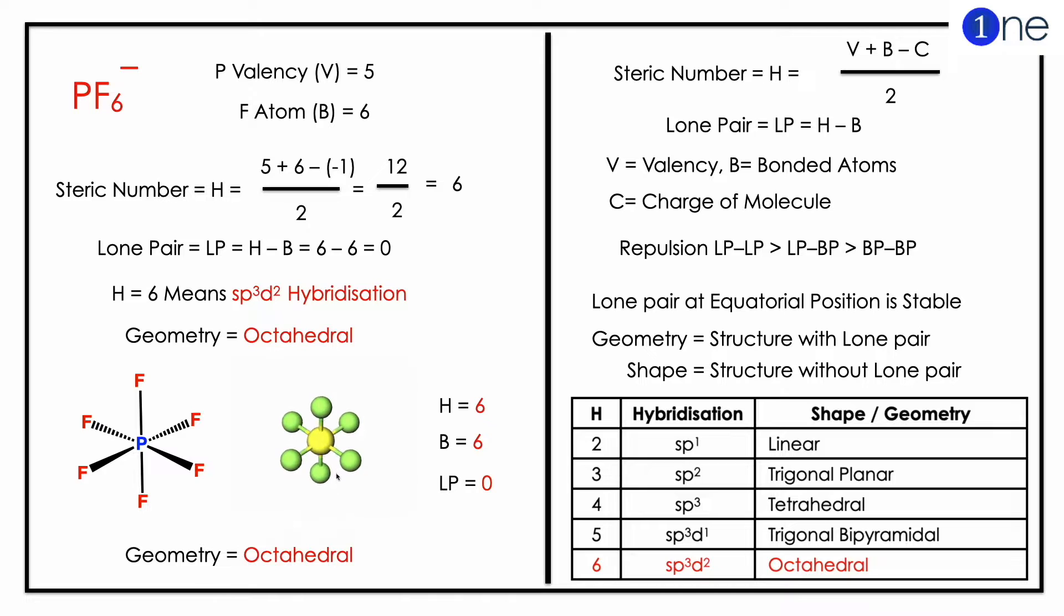If you substitute in the formula, the phosphorus valence is 5, fluorine is 6. So if you substitute in the formula with charges, you have 12 by 2 which equals 6. The lone pair will be 6 minus 6 equals 0.